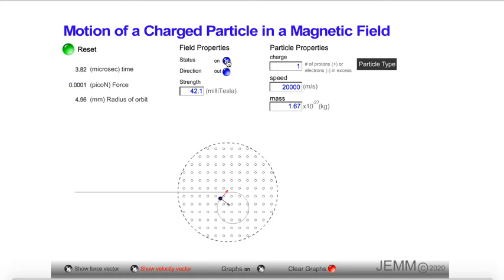Now, notice that the proton seems to be moving at constant speed. Also notice that there are two vectors attached to the proton. One of the vectors, the red vector, indicates the velocity. And the other vector that's perpendicular to it, indicates the force.